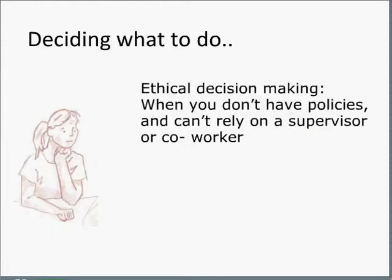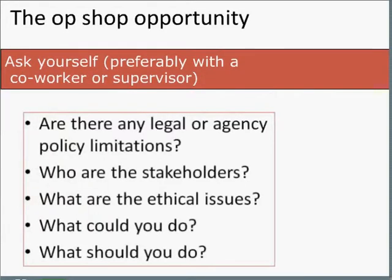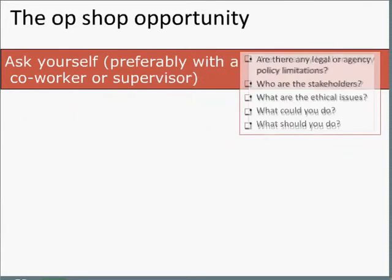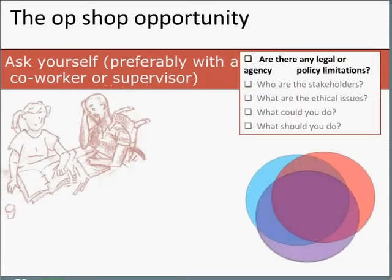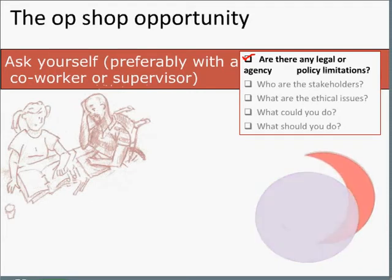But what can we do when we don't have policies and we can't rely on a supervisor or co-worker? This is the time to go back to the written ethical decision-making process. We've started this process already by checking out the legal and policy limitations. Remember, ethical issues are rarely arising in isolation — there's often legal limitations and policies. Writing them into a report will help for future times this happens and ensures that management are aware of the process that you used.